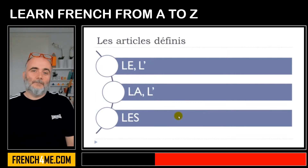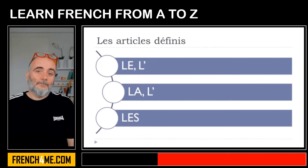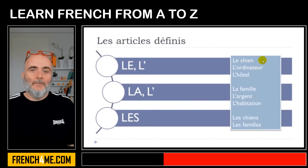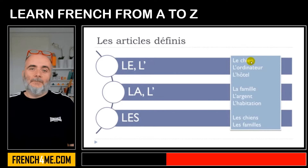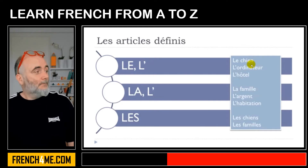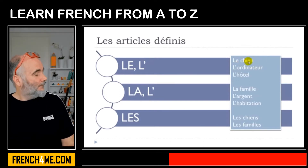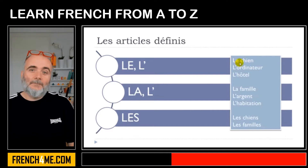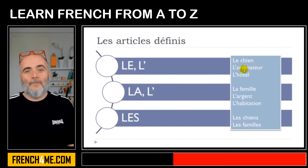So of course, according to the word, you will have to choose the correct article. We'll take a few examples here. The first one is 'chien' — chien means 'a dog' — and in French chien is masculine, so 'le chien'. You just put the article 'le' and then 'chien'.